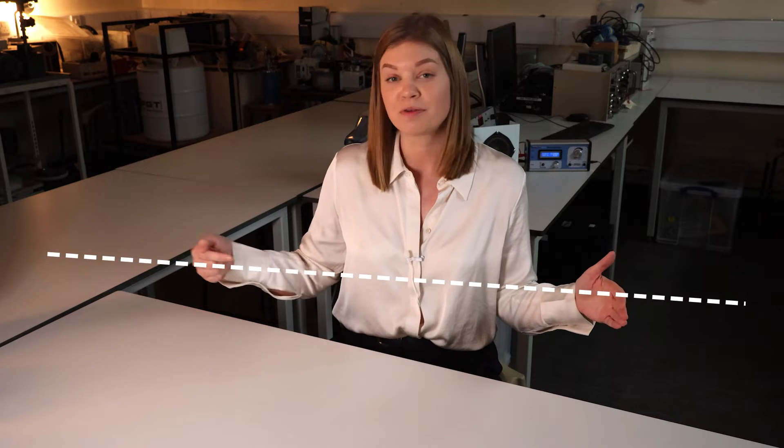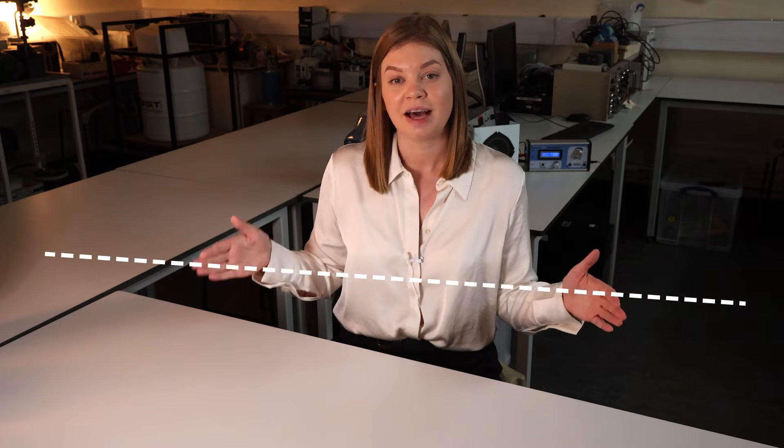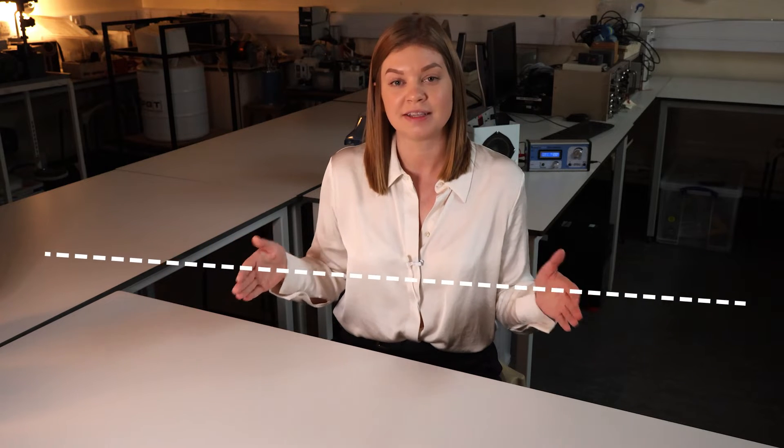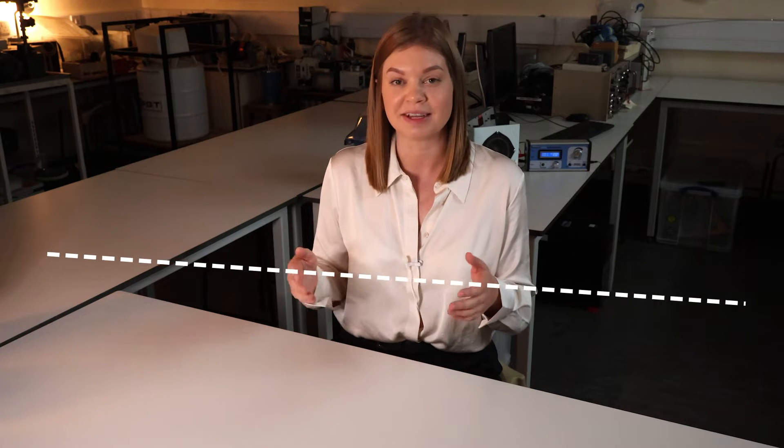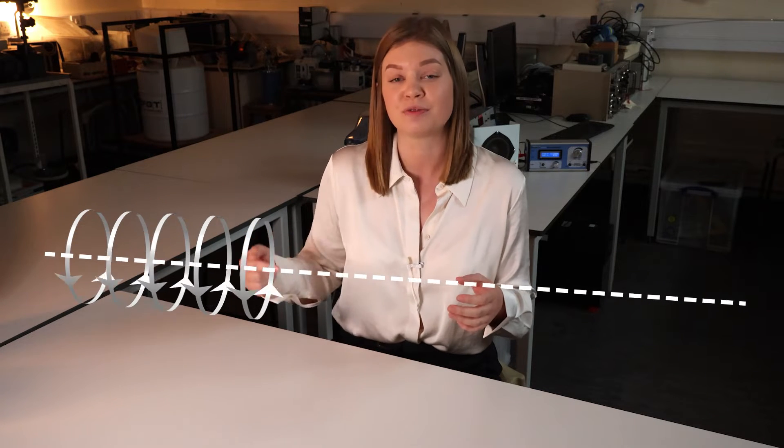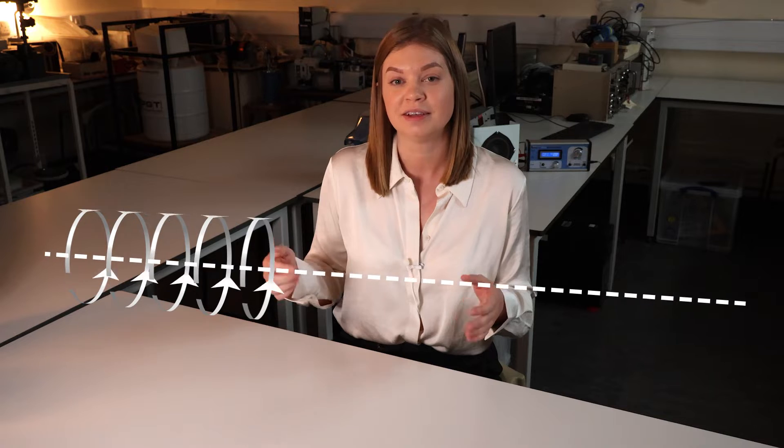But how do we get the speaker cone to move up and down? We use a principle called electromagnetism. If we take a length of wire and pass a current through it, Ampere's law states that a magnetic field is induced and this magnetic field curls around the wire.